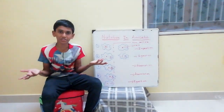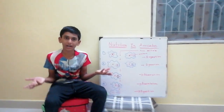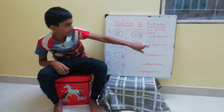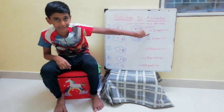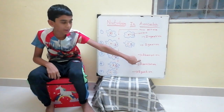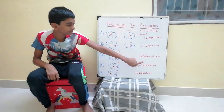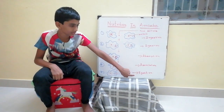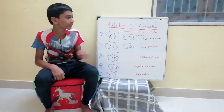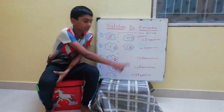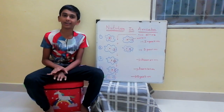What mode of nutrition does amoeba follow? Amoeba follows five steps of nutrition: Ingestion, Digestion, Absorption, Assimilation, and Egestion. We will see all of the five one by one clearly.